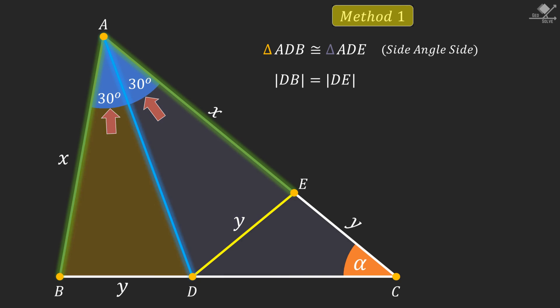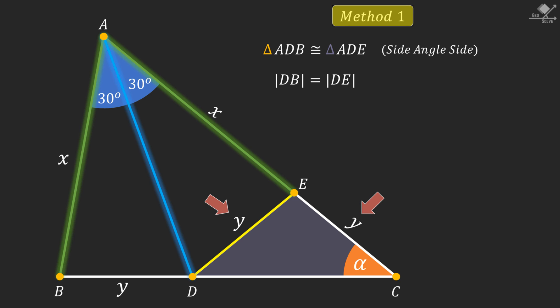Now let's focus on this triangle. We see that two of its sides are equal to Y units. So it's an isosceles triangle. And therefore its base angles should be equal. Now let's use exterior angle theorem to find this angle to be 2 alpha degrees.